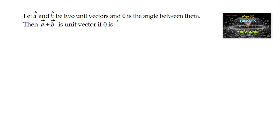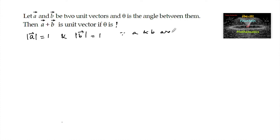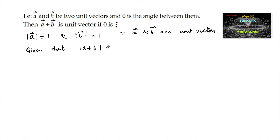Let a and b be two unit vectors and theta is the angle between them. Then vector a plus vector b is a unit vector if theta is what? Theta is the angle between the two vectors a and b, and since a and b are unit vectors, mod a is equal to 1 and mod b is equal to 1. Since a plus b is also a unit vector, mod of a plus b is equal to 1.